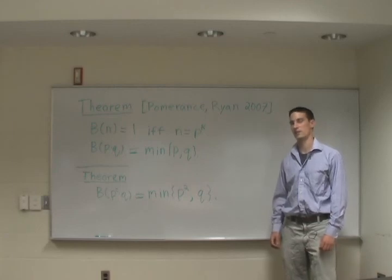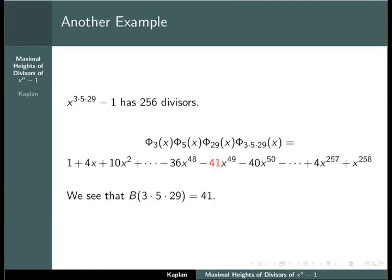We first consider another example. Let n be equal to 3 times 5 times 29. x to the 3 times 5 times 29 minus 1 has exactly 256 divisors. Computation shows that there's one divisor which has a coefficient of negative 41 and that this is the maximum absolute value that occurs. So we see that b of 3 times 5 times 29 is equal to 41.